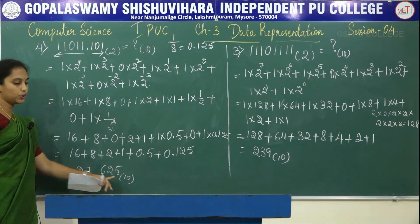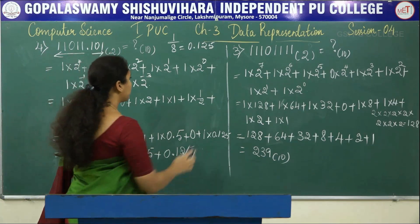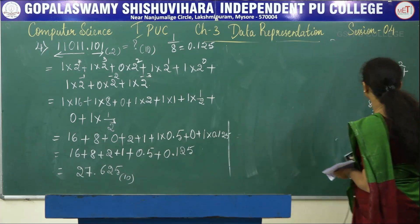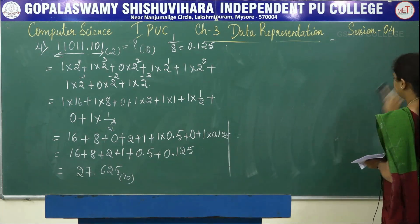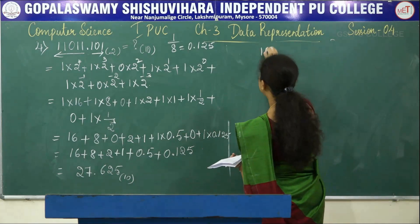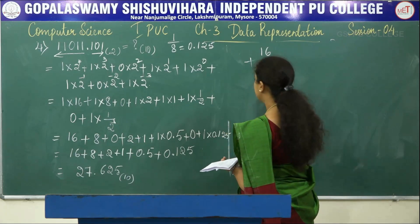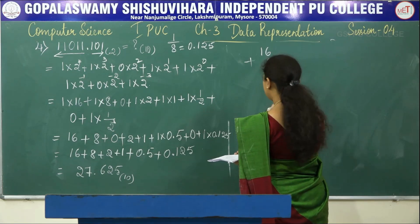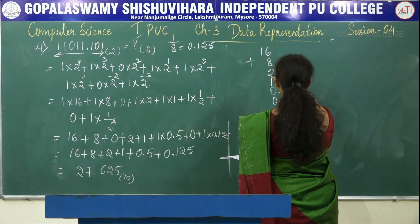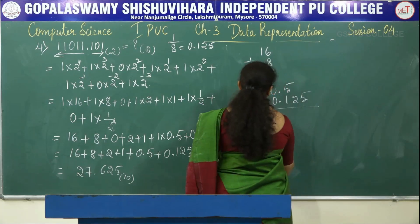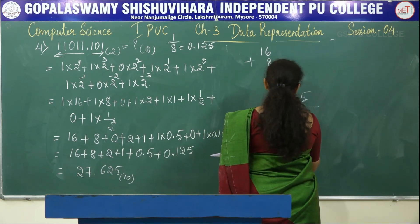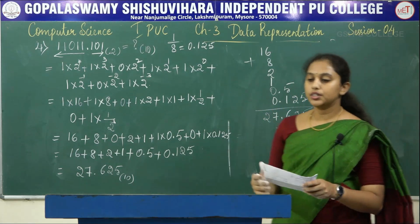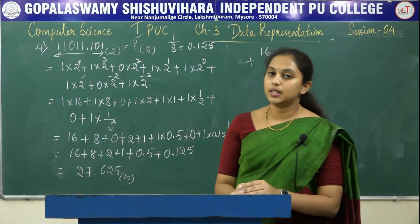So 16 + 8 + 2 + 1 + 0.5 + 0.125 = 27.625. This is how we convert from binary to decimal number system.